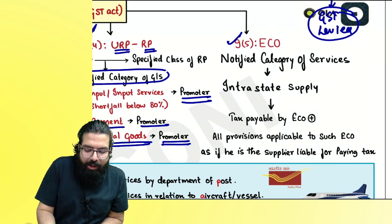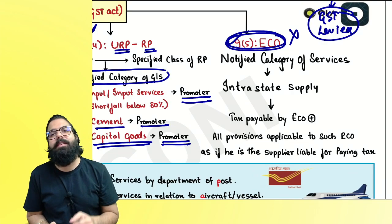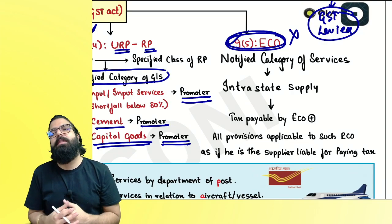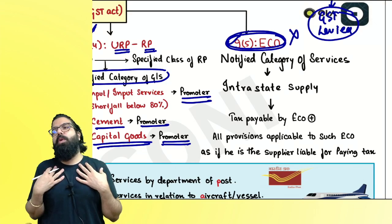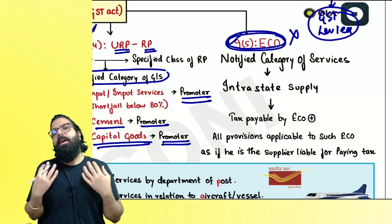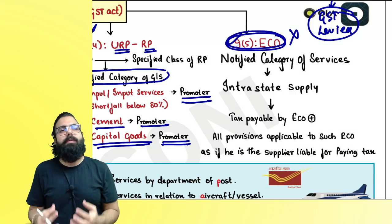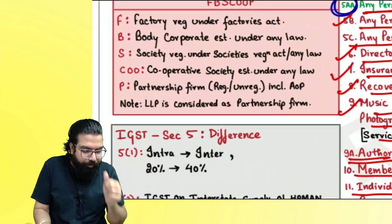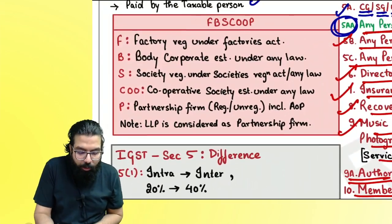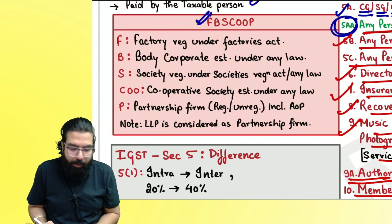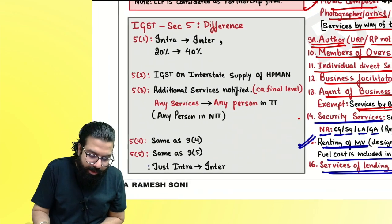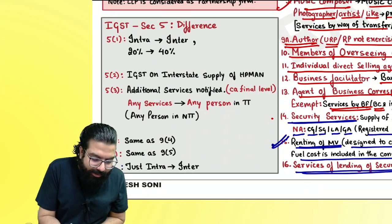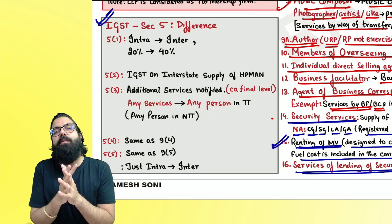Section 9(5) is not applicable at the intermediate level. It states that the government will notify certain services for which the e-commerce operator will pay all the taxes and be the person liable. But as of now, this is not applicable at the intermediate level.